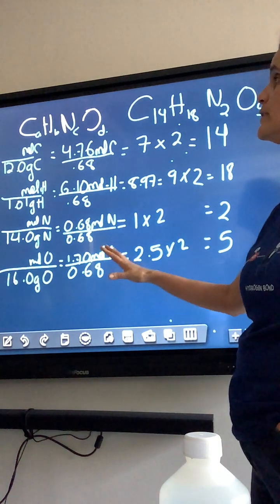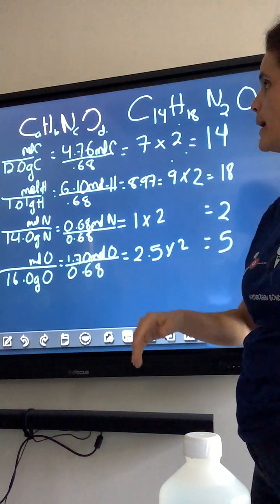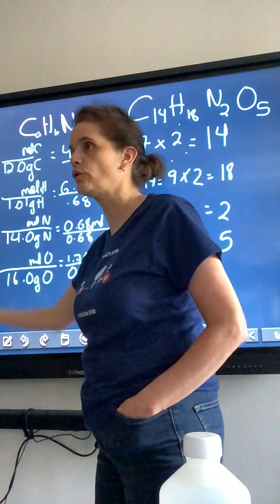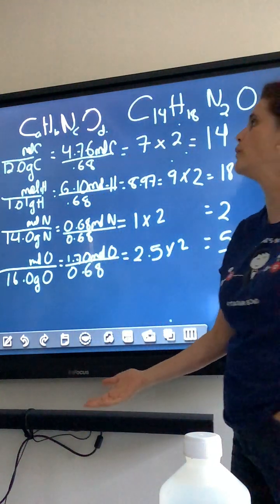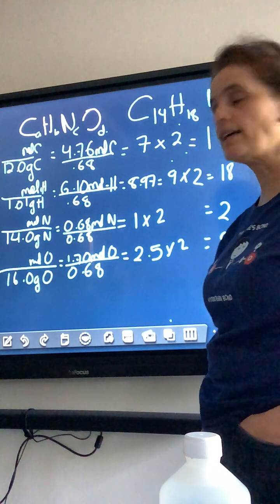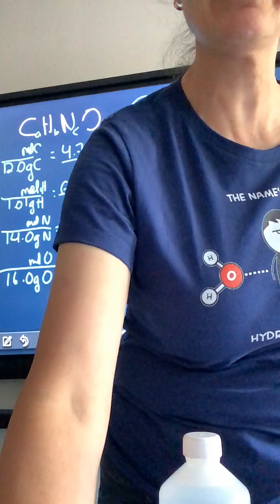This is how to find the empirical formula based on the different masses of a compound. Now, what we're going to do is figure out how do you get the masses of a compound. How do they know what masses you have in an organic compound? So, that's chapter number 2. Let's go ahead and make another video for that.